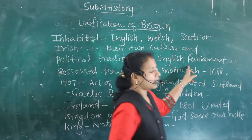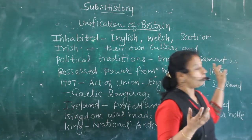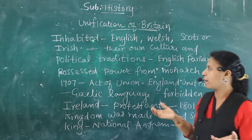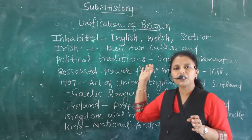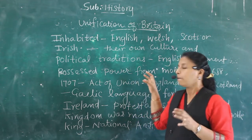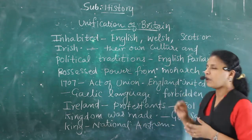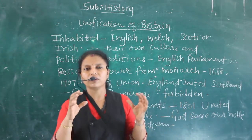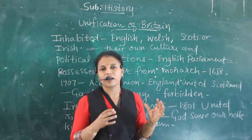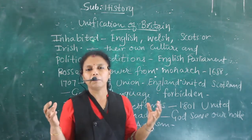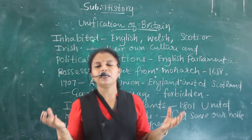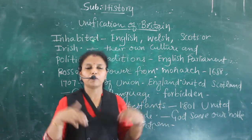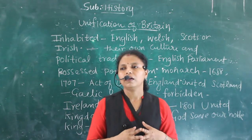The English Parliament wanted to establish a unified parliament. That is why the English Parliament possessed power from the monarch. Those who were in the monarch were ruling in their separate places. England first made a Parliament and possessed power from the monarch.